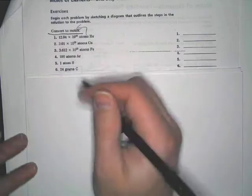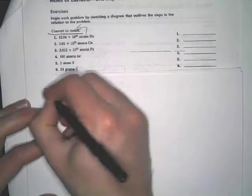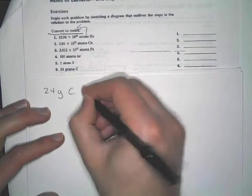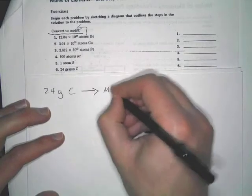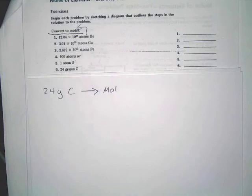We've got grams to moles. So you've got 24 grams of carbon, and you're going to moles. You might even want to start writing it like this if this will help you, so you remember what you're doing.